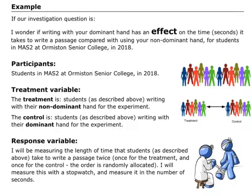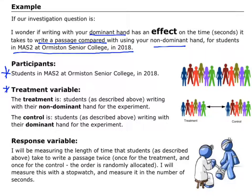Here's an example. The question is: I wonder if writing with your dominant hand has an effect on the time it takes to write a passage, compared with using your non-dominant hand, for students in MAS2 at OSC in 2018. I can identify my participants: the experiment is going to be done on students in MAS2 at OSC in 2018. For the treatment variable, the control is writing with the dominant hand — that's the normal way of things — and the treatment is students writing with their non-dominant hand.